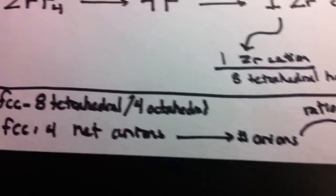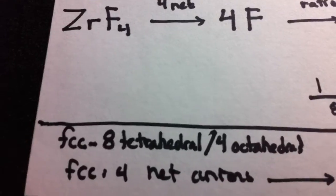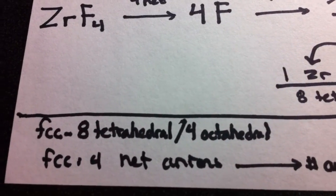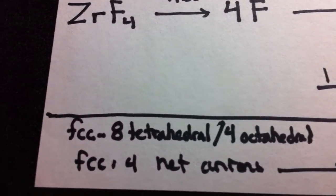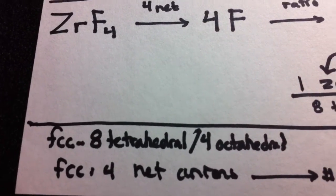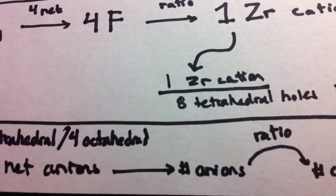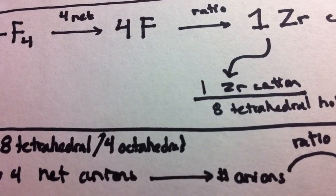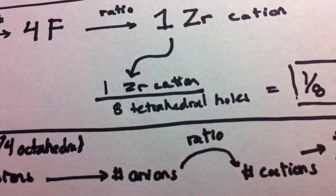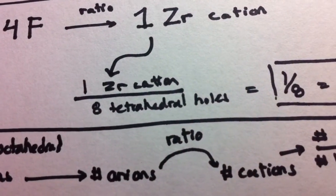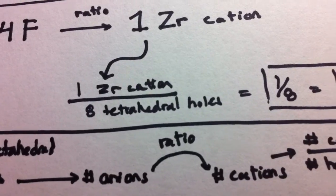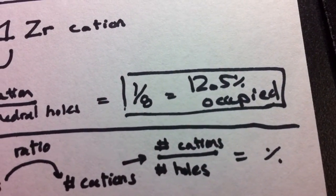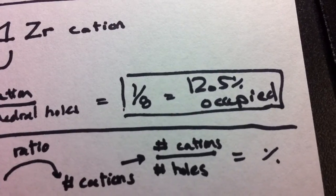Now let's review. The face-centered cubic unit cell has eight tetrahedral holes and four octahedral holes, and four net anions. Knowing the number of anions leads to the number of cations via the formulaic ratio, which then gives us the fraction of tetrahedral holes occupied for each case.